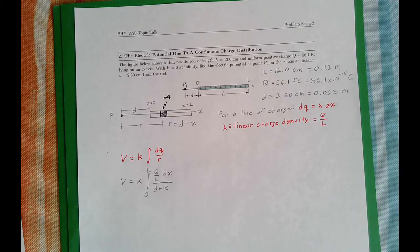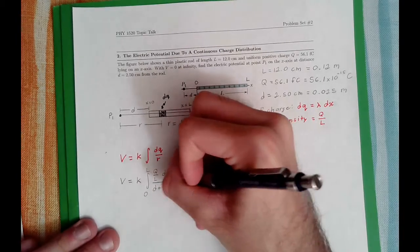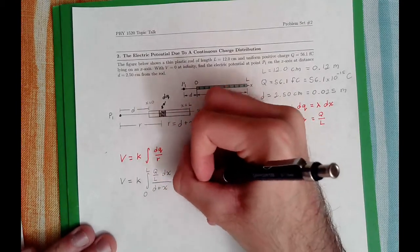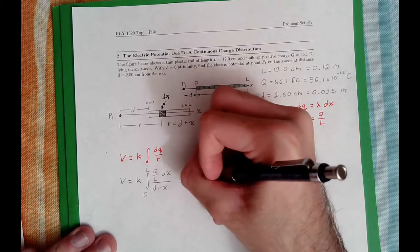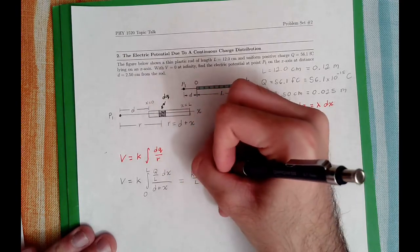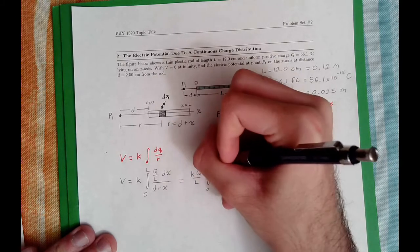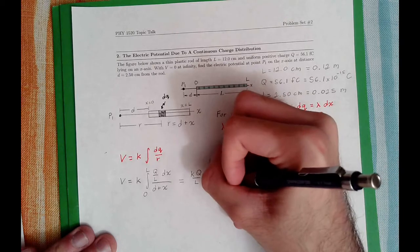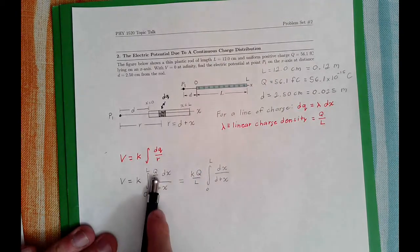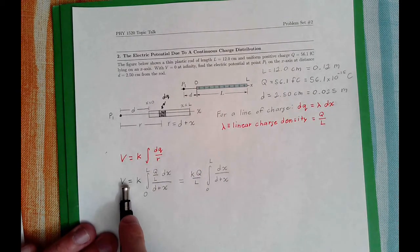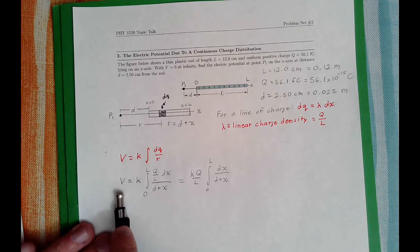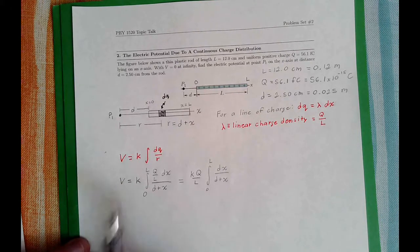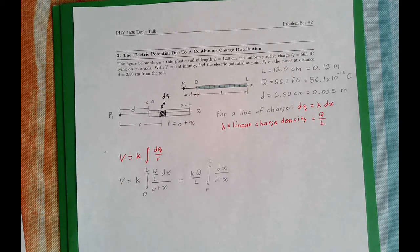So before we integrate, let's take out Q over L. Let's write it a little bit nicer. So this is KQ over L from 0 to L of DX over D plus X. I took out Q over L outside the integral, since Q over L is a constant. Constants come out of the integral. So now we just need to solve this.